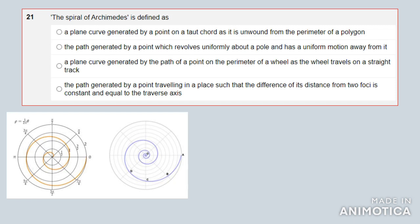Is it C) a plane curve generated by the path of a point on the perimeter of a wheel as the wheel travels on a straight track, or D) the path generated by a point traveling in a plane such that the difference of its distances from two foci is constant and equal to the transverse axis? The answer would be B.